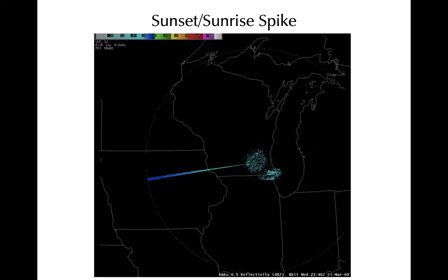Similarly, a sunrise or sunset spike occurs along a single ray in the direction of the sun when it is near the horizon. In this case, the echo is not reflecting off the sun, but rather the sun is a source of microwave emissions that the radar interprets as a return of power. Technically, this is a form of radio frequency interference, in which the radar is detecting radiation from a different source than the signal it transmitted.